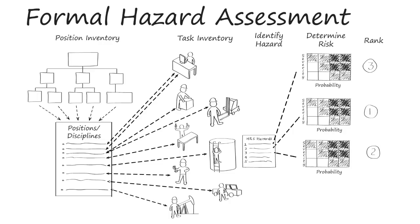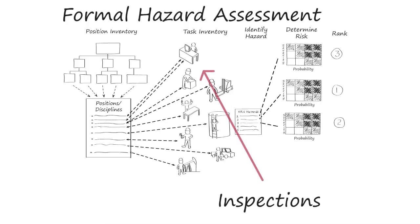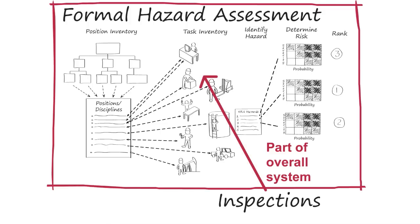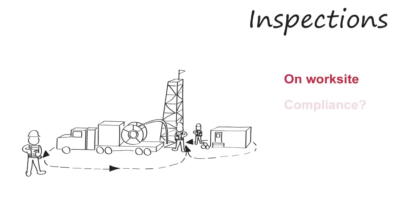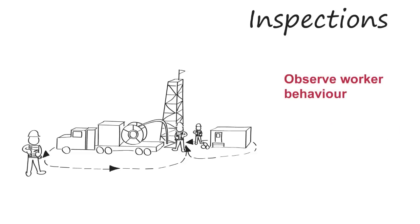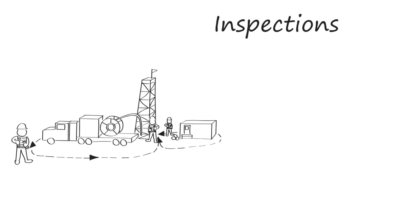This formal system is distinct from two other items you will be reviewing for Element B: inspections and site-specific hazard identification. So what's the difference between hazard assessments and inspections? Inspections are not hazard assessments, but they are an important part of a company's overall system of hazard assessment and control. Inspections provide a way for a company to check if its hazard assessment and hazard control measures are actually working. An inspection will involve being on the work site, looking for compliance with the company's policies, ensuring controls are in place, observing actual worker behavior, and it may pick up on new or unanticipated hazards. So inspections are not hazard assessments, but if done right, they drive continuous improvement into the company's formal hazard assessment and control systems.